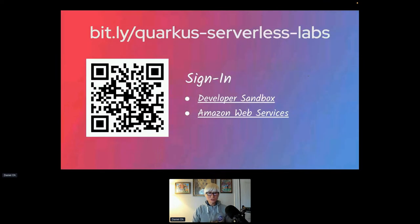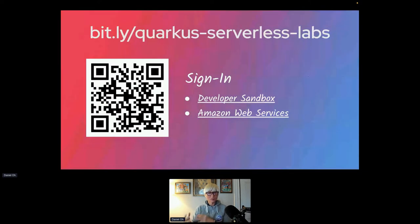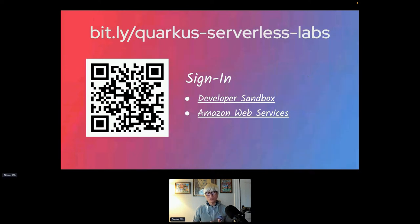There are two things you should do while I keep speaking in this pre-presentation. First, hopefully some of you have already signed up for the free developer sandbox by Red Hat — we're going to deploy a serverless function to that Kubernetes cluster. Second, we're going to deploy the same serverless function to Amazon Lambda. You can sign up for free, though you need to input a credit card. Trust me, it won't be charged when you deploy the simple serverless function.